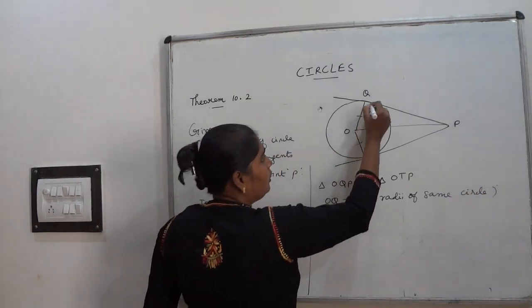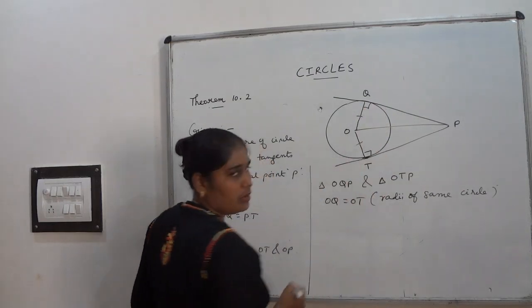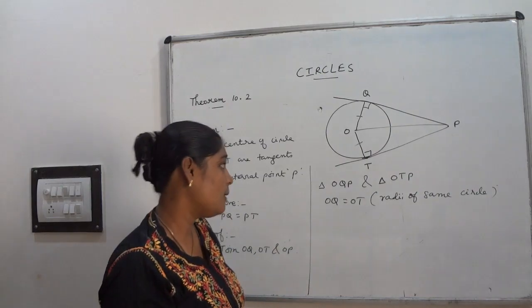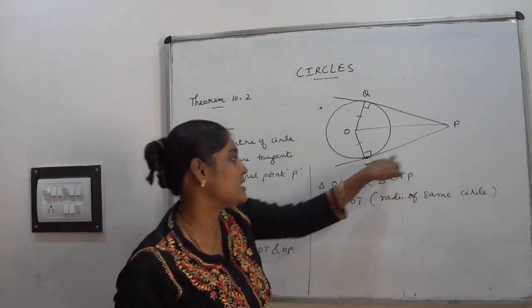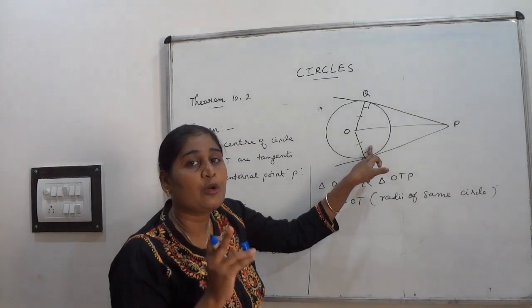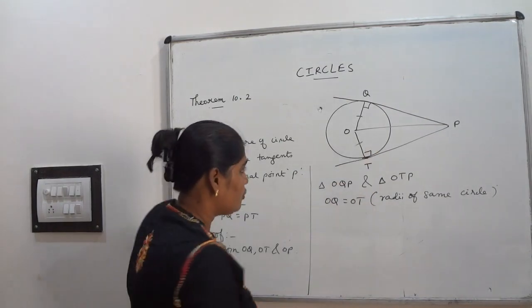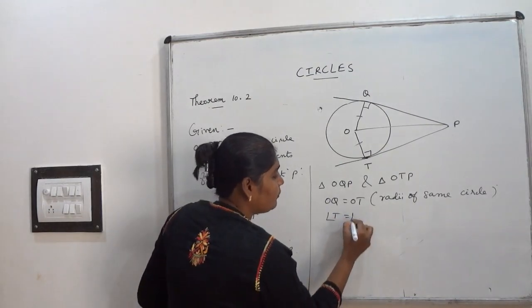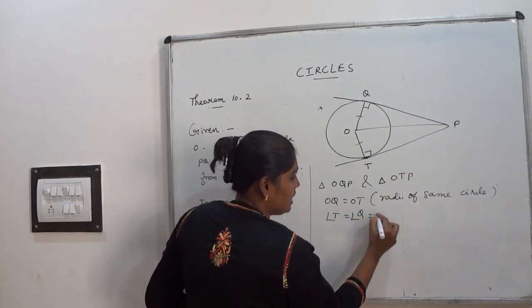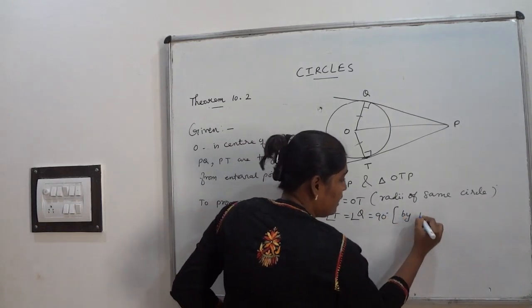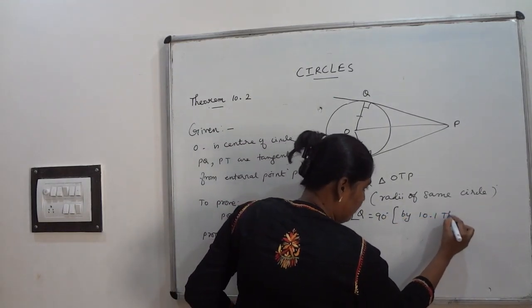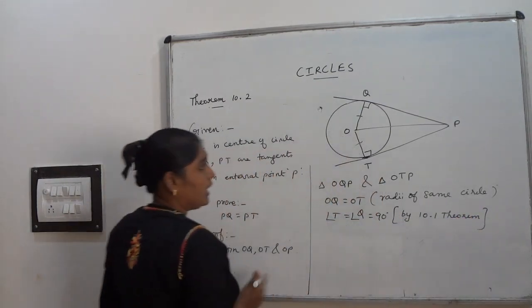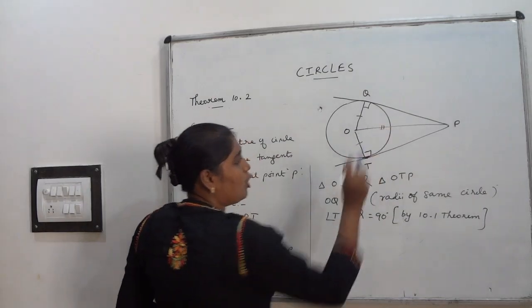Then angle Q equal to angle T equal to 90 degree. Why it is? Just now only we have seen in theorem 10.1. Radius and tangent is always perpendicular through the point of contact. We have seen. So that angle T equal to angle Q equal to 90 degree. So angle T equal to angle Q equal to 90 degree by 10.1 theorem. I am writing, but you have to write the statement of 10.1 theorem here.